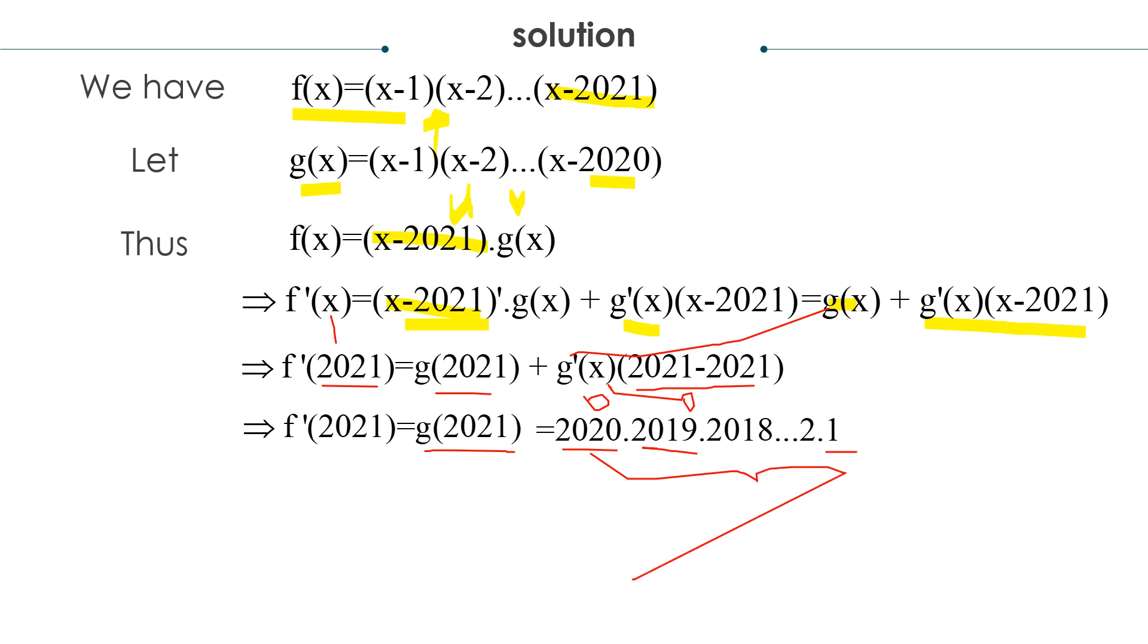Can you represent it in a very short form of factorial? Can you see that? You can see, right? It's equal to 2020 factorial. And that's the answer. So our problem is solved.